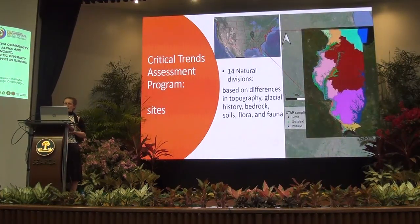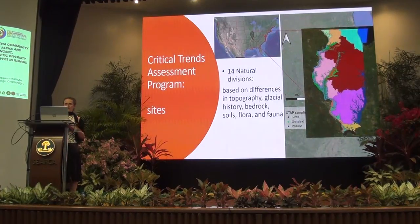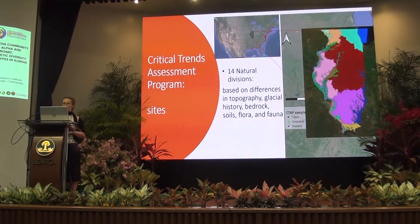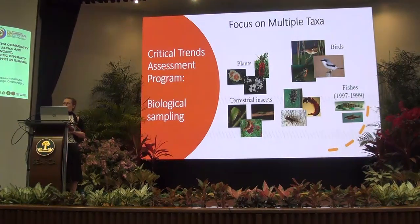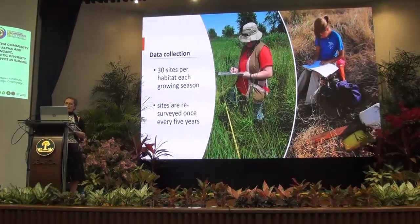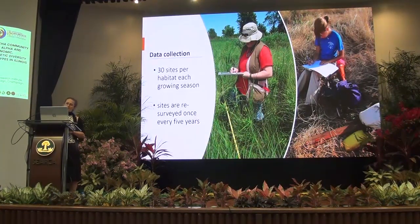Illinois is an amazing place because it may be divided into 14 natural divisions that differ geologically based on topography, geological history, bedrock, soils, flora, and fauna. The program focuses on several different taxa — mainly plants, birds, fishes, and terrestrial insects. They usually visit 30 sites per habitat each growing season, and the sites are resurveyed once every five years.